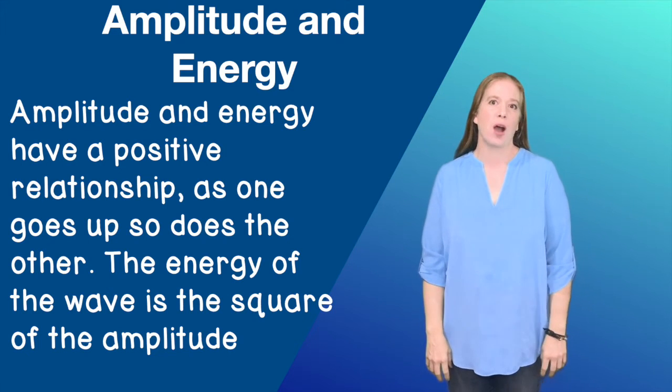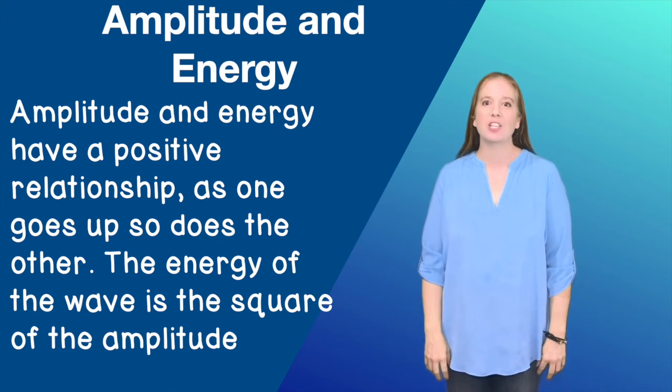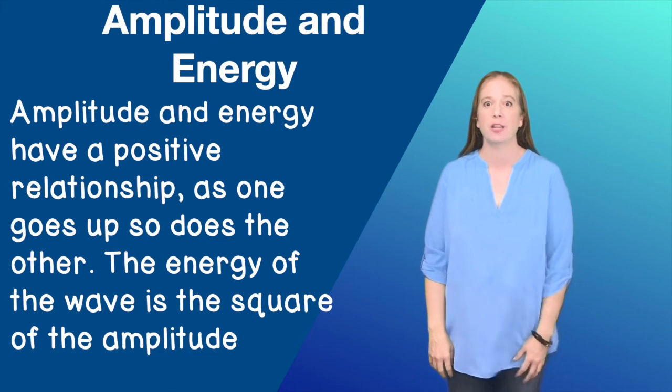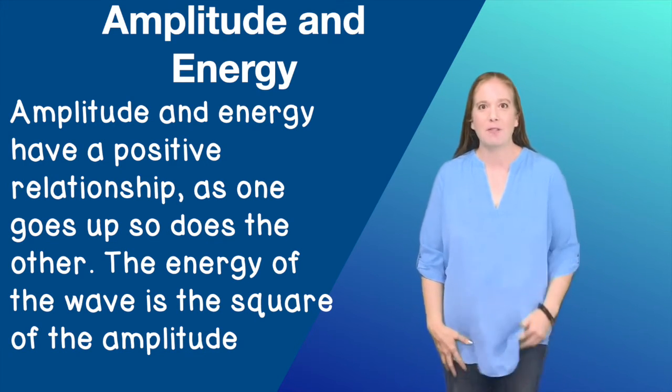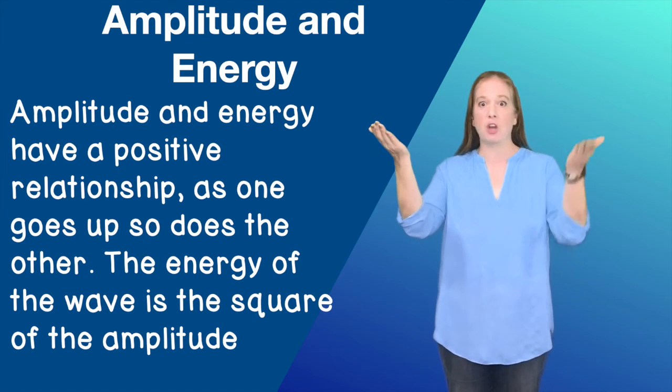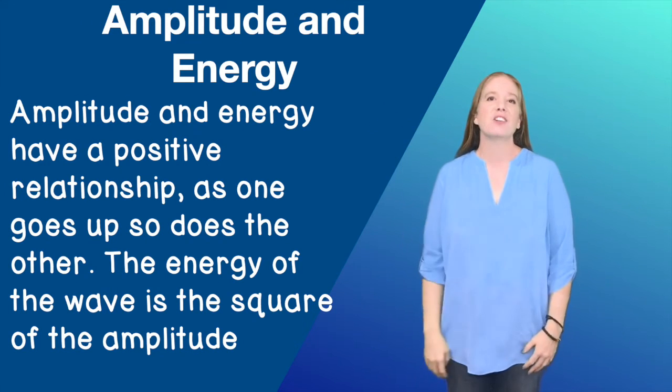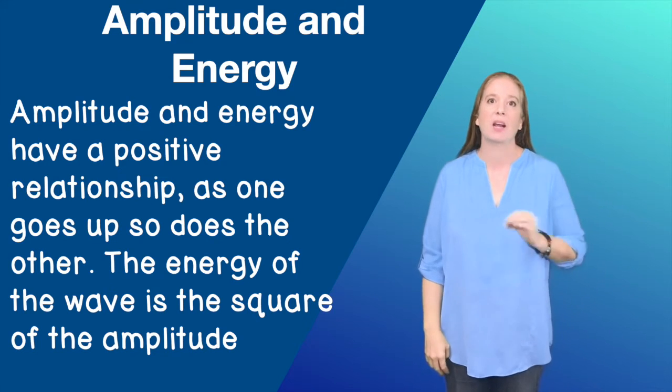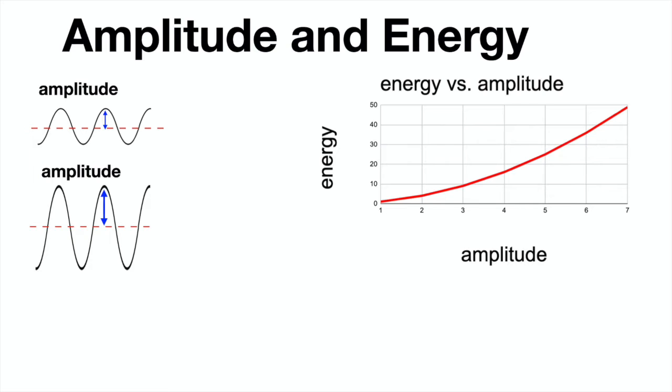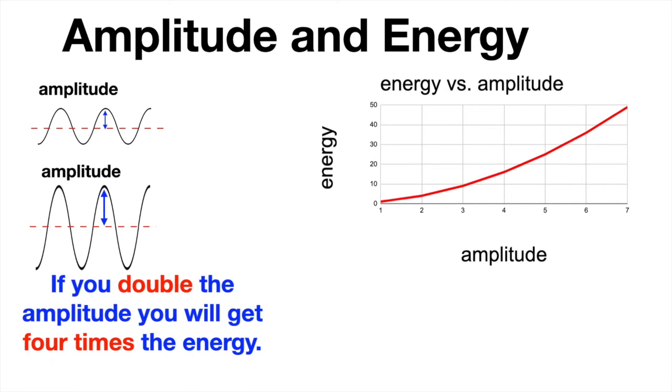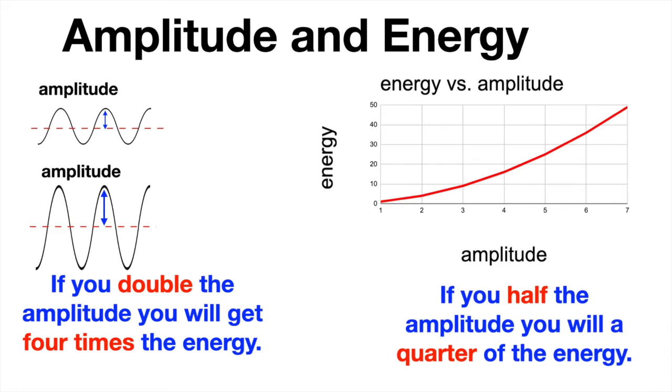Now that you know some wave properties, let's talk about the relationship between amplitude and energy. Amplitude and energy have a positive relationship. As one goes up, so does the other. The energy of the wave is the square of the amplitude. Since energy is the square of the amplitude, if you double the amplitude, your wave will have 4 times the energy. Also, if you half the amplitude, each wave will end up with only a quarter of the energy.